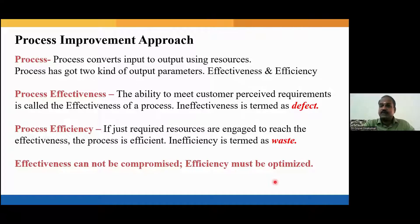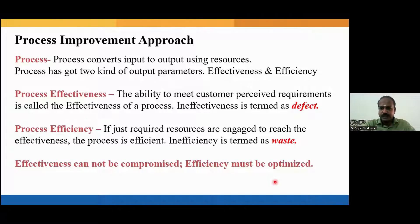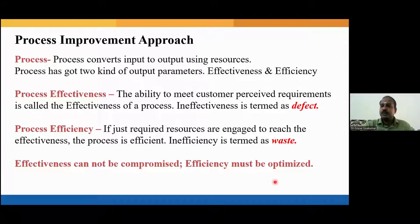Process efficiency refers to how much resources you consume to convert your input into the desired output. If you consume only the exactly required resources, your process is efficient. If you over-consume resources, your process is inefficient. This inefficiency is termed as waste. We must eliminate all forms of inefficiency — that is called the Lean approach. Lean is all about improving efficiency and eliminating wasteful activities, while Six Sigma is all about improving effectiveness.